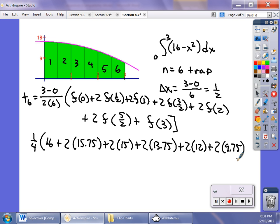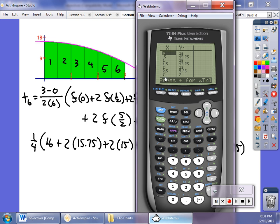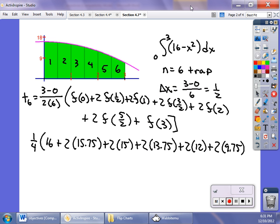Plus 2 times 9.75. On that last one, f(3) is just 7—we're not counting it twice, just once. So plus 7.